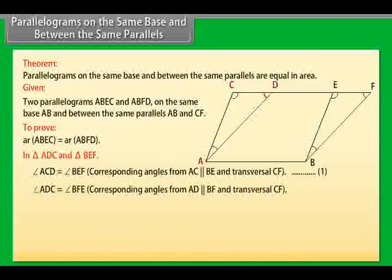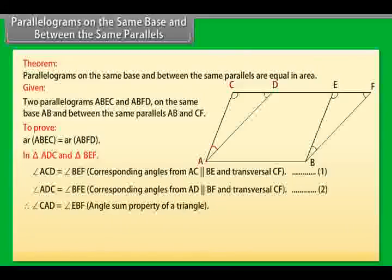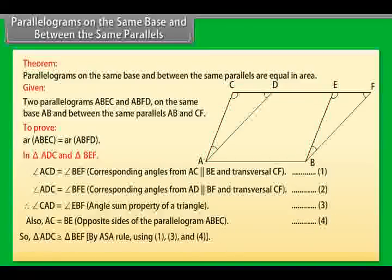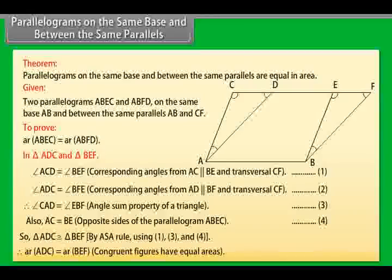Angle ADC equals angle BEF because these are corresponding angles from AD parallel to BF and transversal CF. Mark it as (2). Therefore, angle CAD equals angle EBF by the angle sum property of a triangle. Mark it as (3). Also, AC equals BE as opposite sides of parallelogram ABEC. Mark it as (4). So triangle ADC is congruent to triangle BEF by the ASA rule, using (1), (3), and (4). Therefore, area of ADC equals area of BEF because congruent figures have equal areas. Mark it as (5).